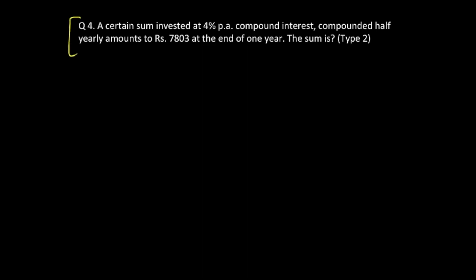Okay, so in question number four, a certain sum invested at 4% per annum compound interest compounded half-yearly. So this is a half-yearly question, so that makes it type 2. It amounts to rupees 7803, so 7803 is the amount that you are getting after this entire process, and the entire process actually is that of one year.